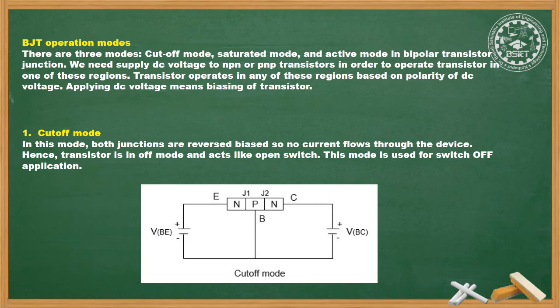The first condition is cut-off mode. In this mode, both junctions are reverse biased, so there is no current flow. Hence the transistor is in OFF mode and acts like an open switch. This mode is used for switch-off applications.